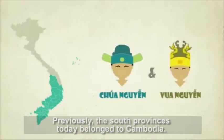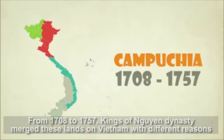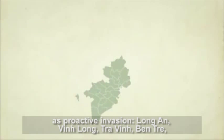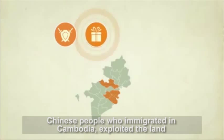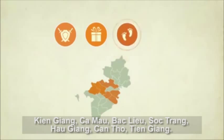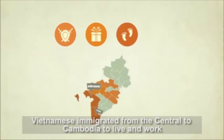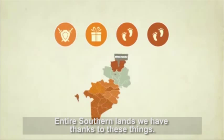Previously, the southern provinces belonged to Cambodia. From 1708 to 1757, kings of the Nguyen Dynasty merged these lands into Vietnam through different means: proactive invasion — Vinh Long, Tra Vinh, and Ben Tre; through providing military help during Cambodia's internal conflicts — Kien Giang and Dong Thap; and through Chinese immigrants in Cambodia who exploited land and offered it to the Nguyen Emperor for protection — including Ca Mau, Bac Lieu, Soc Trang, Hau Giang, Can Tho, and Tien Giang. Vietnamese immigrants also moved from the central to Cambodia to live and work, and Lord Nguyen gradually merged those lands — Binh Phuoc, Binh Duong, Tay Ninh, Saigon, Binh Hoa, and Vung Tau — into Vietnam.